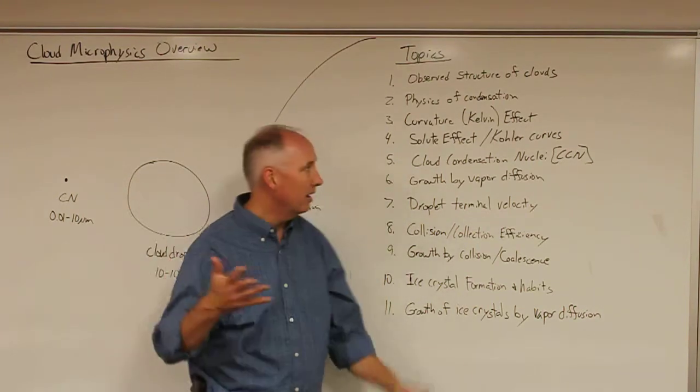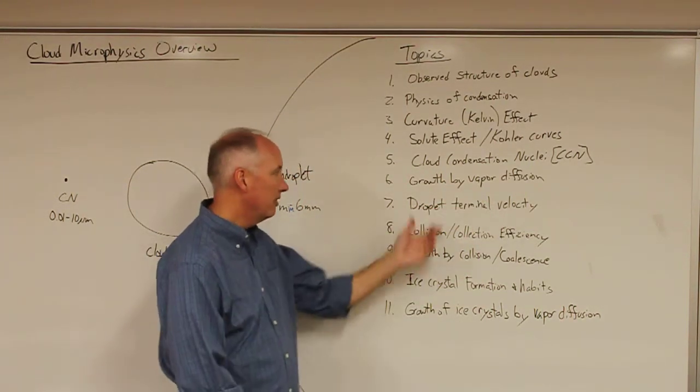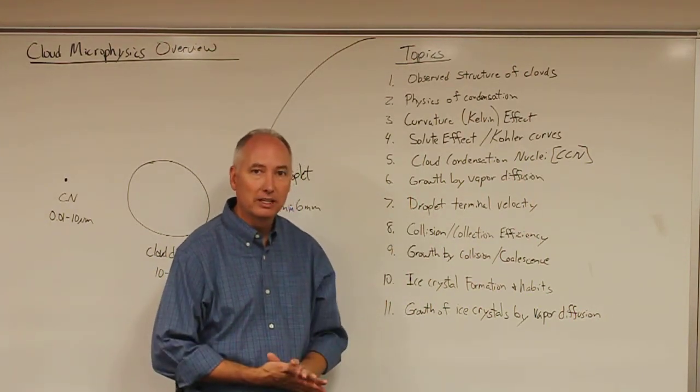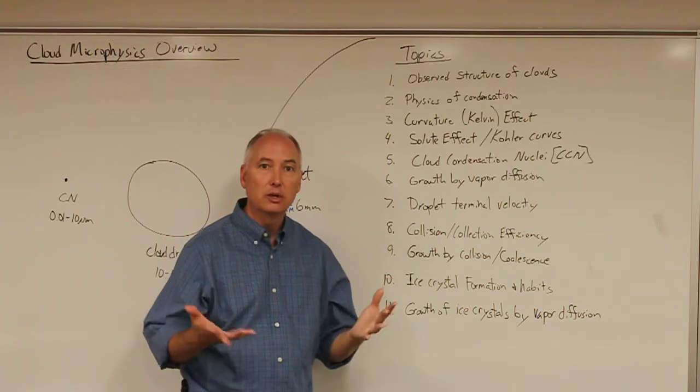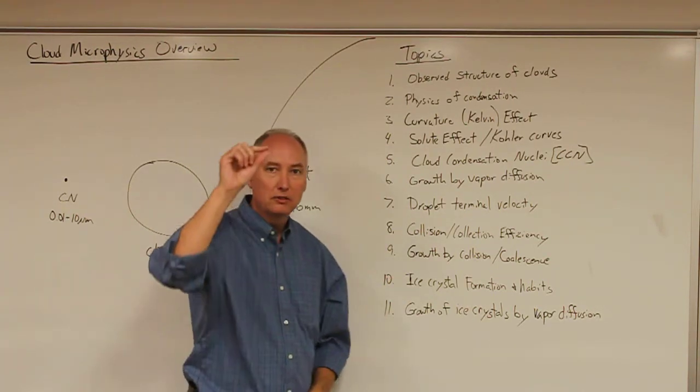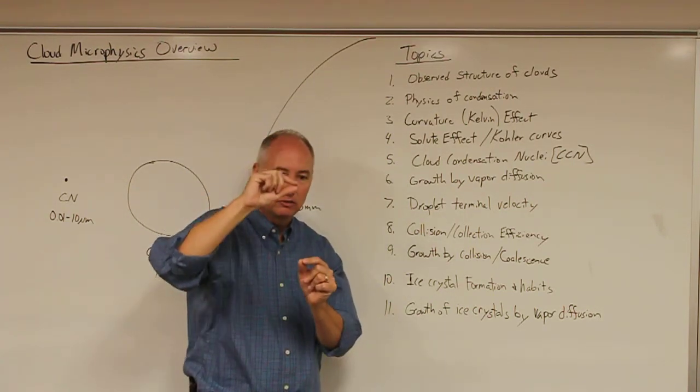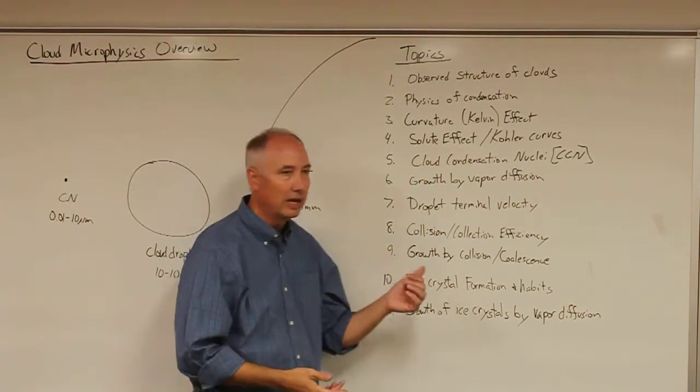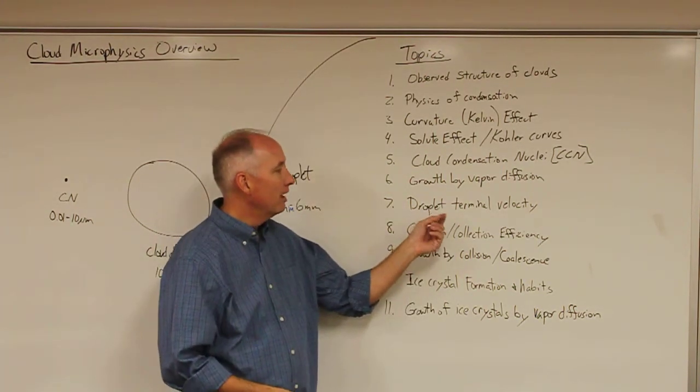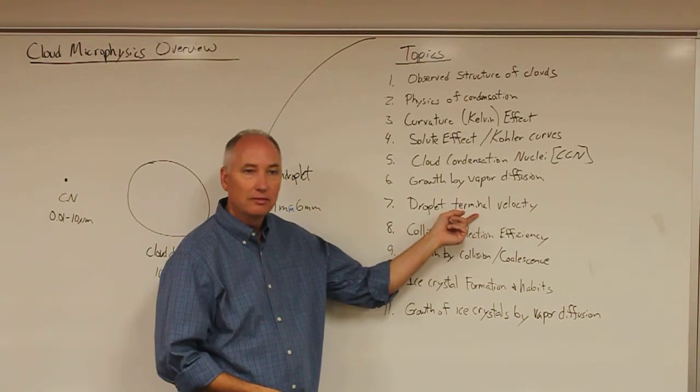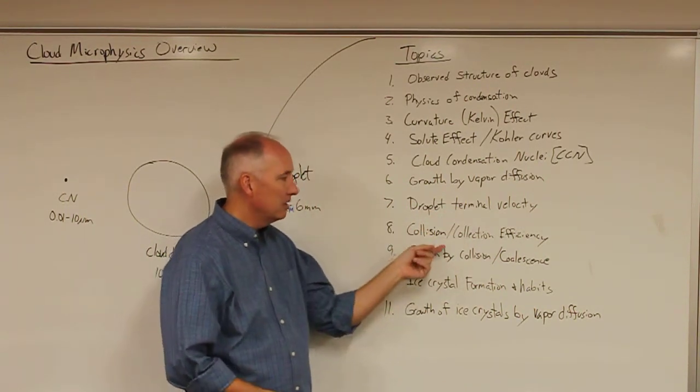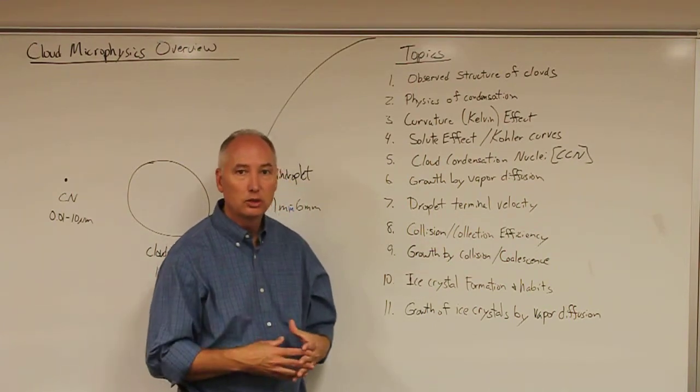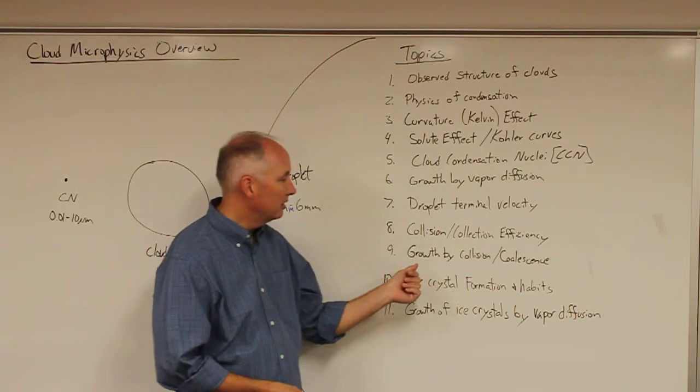Then we'll start to look at a different type of growth mechanism: the collision coalescence mechanism, where droplets are falling through the atmosphere at different terminal velocities and overtake one another, colliding and coalescing. We have to first figure out what is the terminal velocity of the droplets, what is their collision efficiency, and what is their collection efficiency once they actually hit.